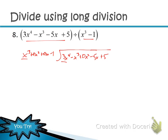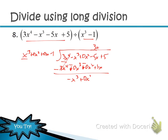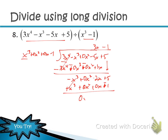Divide 3x⁴ by x³ to get 3x. Put 3x on top. Multiply down and change all signs — get 0, then −x³, +0x², −2x. Bring down +5. Now −x³ divided by x³ is −1. Multiply down: −1 times (x³ + 0x² + 0x − 1) = −x³ − 0x² − 0x + 1. Change signs. Get 0, then 0x² − 2x + 4. No more terms to bring down, so we're done.